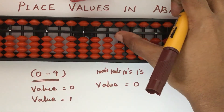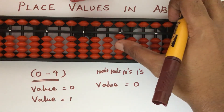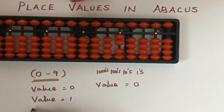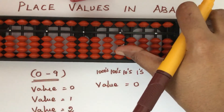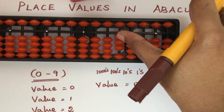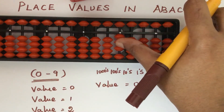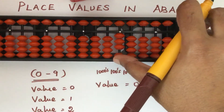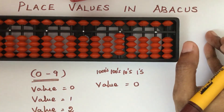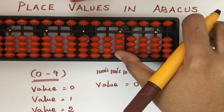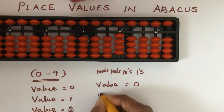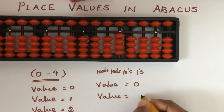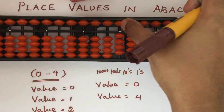Now I am pushing one more lower bead to the beam, so the value is equal to two. Pushing one more lower bead — counting one, two, three — the value is equal to three. Pushing the last lower bead up, there are now four lower beads touching the beam, so the value is equal to four.